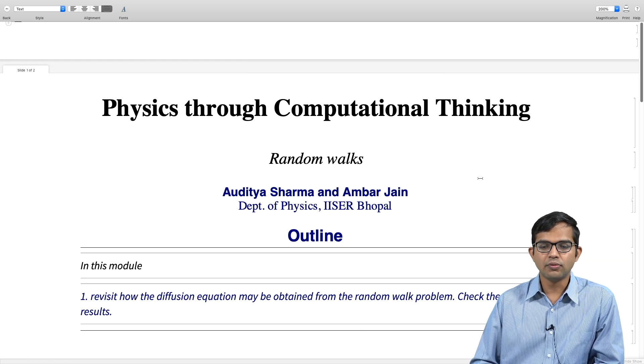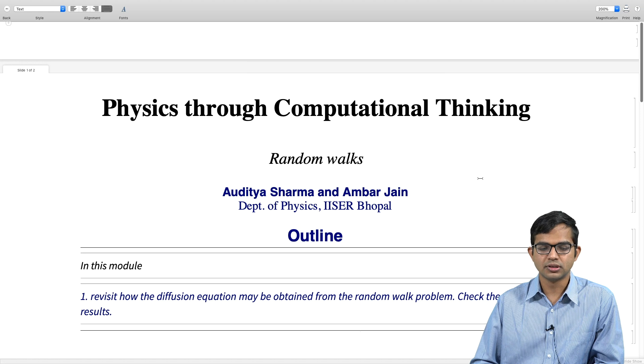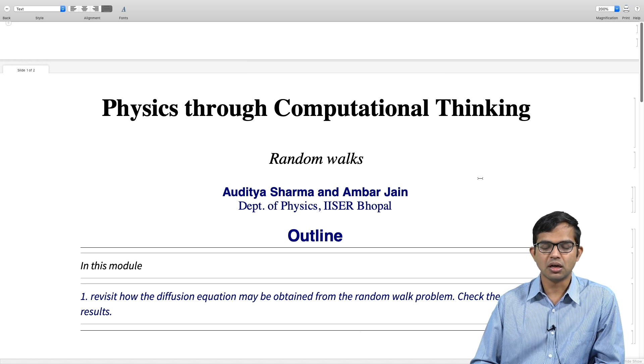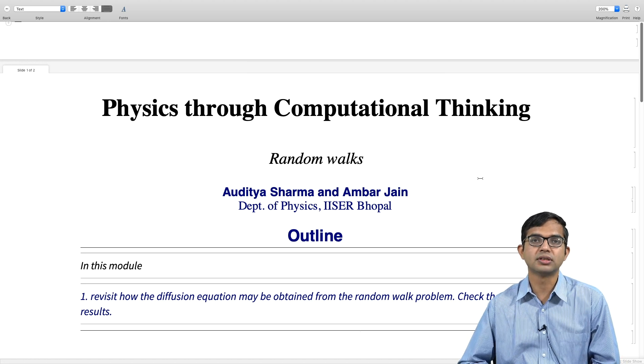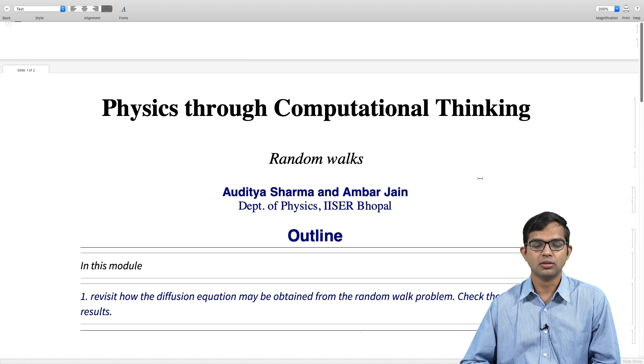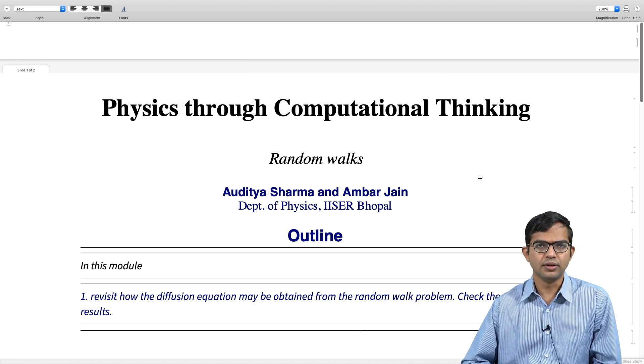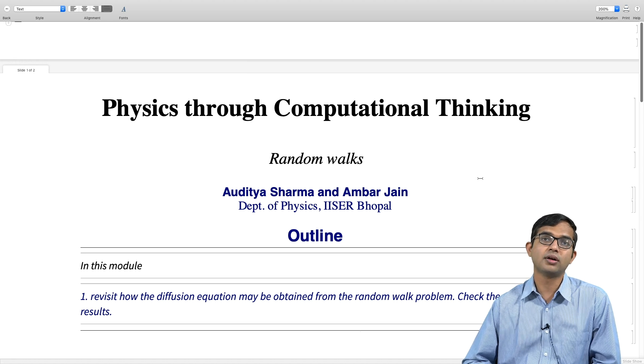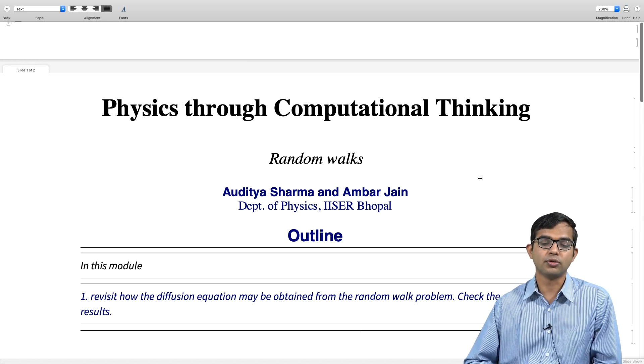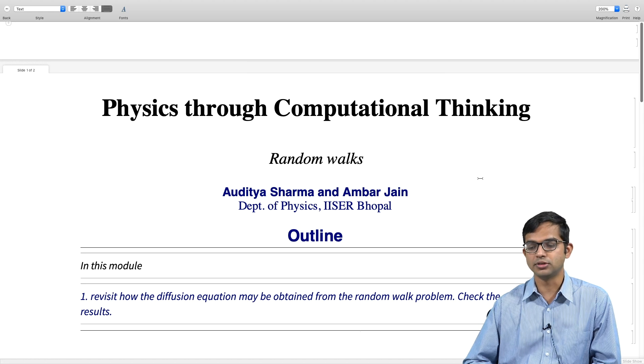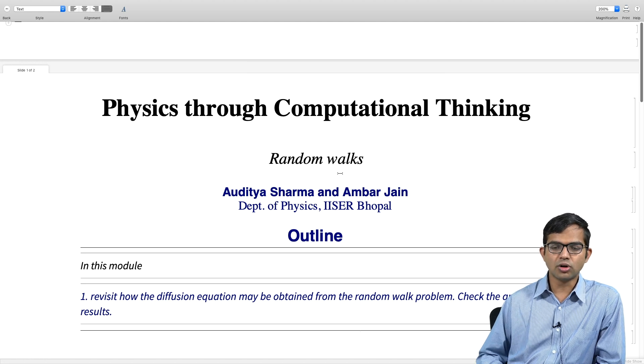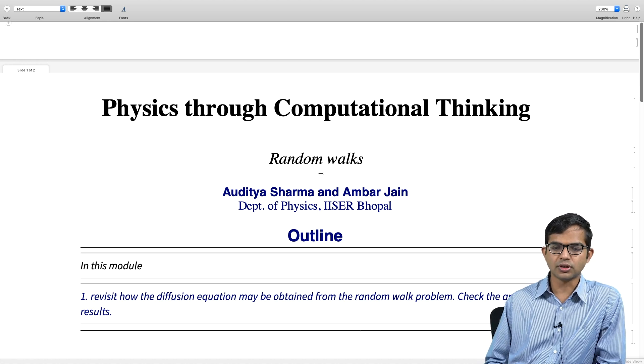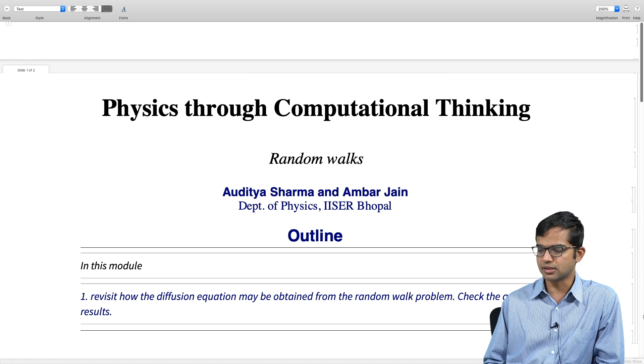Hello everyone. We have looked at how simple discrete random walks can give us insight into how diffusive motion happens. We also saw how the diffusion equation itself can be motivated from the random walk point of view, and we managed to make contact between these two. What I want to do now in this module is quickly show you some more arguments around this theme.